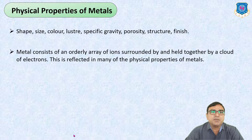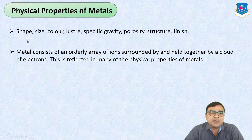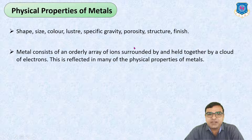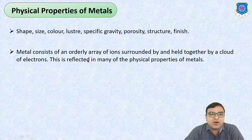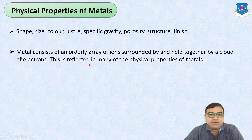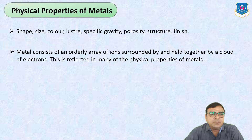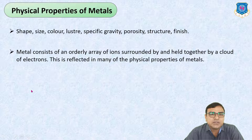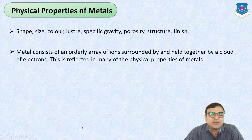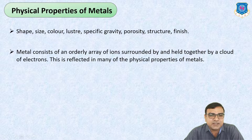Now let us see the physical properties of metals. The main physical properties are shape, size, color, luster, specific gravity, porosity, structure, and finishing of the metal. Metals consist of an orderly array of ions surrounded by and held together by a cloud of electrons. In all metals, the outermost orbit has one, two, or three electrons which are moving, and that is why metals have distinctive properties.